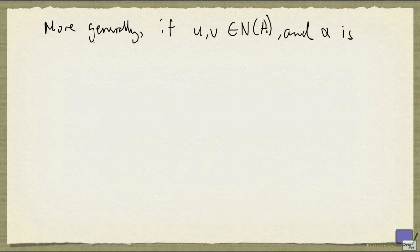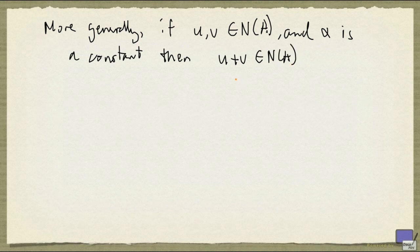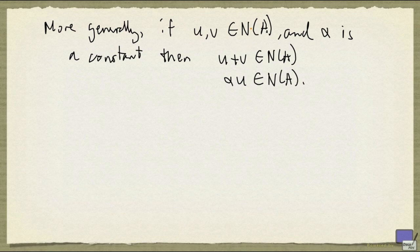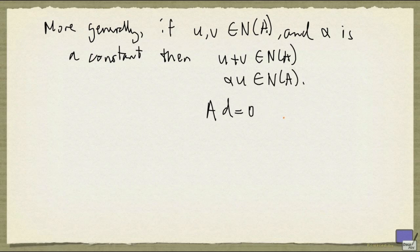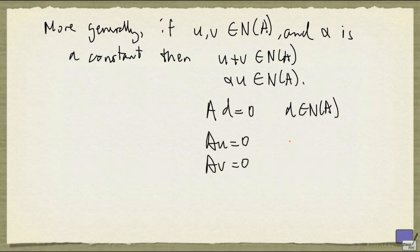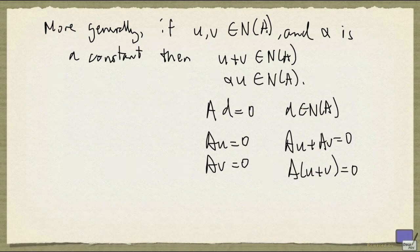More generally, what you can show is that if u and v are in N(A), and alpha is a constant, then u plus v is also in N(A), and alpha times u is also in N(A). This is not too difficult to check. You can just check by looking at the definition of N(A). For any d in N(A), you know Ad is 0. So if you have Au equal to 0 and Av equal to 0, then adding them you just get Au plus Av equal to 0, which is the same as A times (u plus v) equal to 0. So u plus v again is in N(A). And you can do a similar thing for alpha times u.